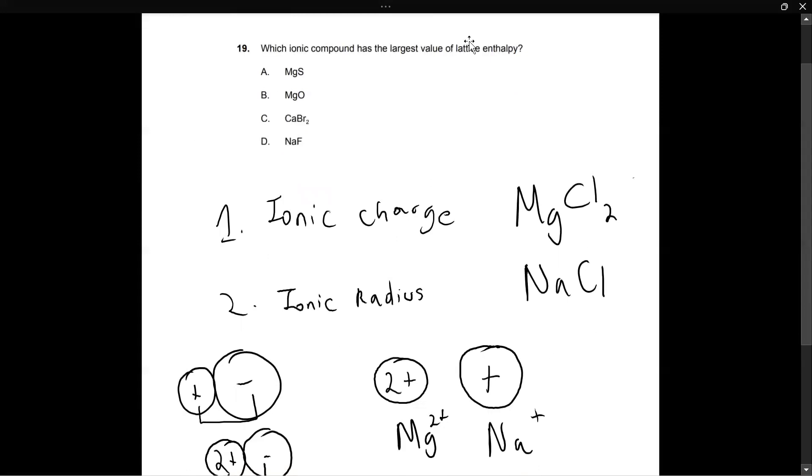Now, getting to our question, which ionic compound has the largest value of lattice enthalpy? Well, we can automatically eliminate D because let's look at the charges. NaF is plus one and minus one. So D is out, because we have magnesium here. Magnesium is plus two, sulfur is minus two. Same case here, magnesium is plus two, oxygen is minus two. With CaBr2, calcium is a plus two metal. It loses two electrons, but Br is minus one because it's a halogen. So it gains one electron. So this is also out, because remember the nuclear charge, the higher it is, the stronger the attraction between the two nuclei.